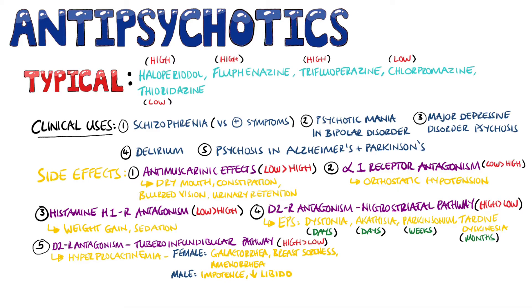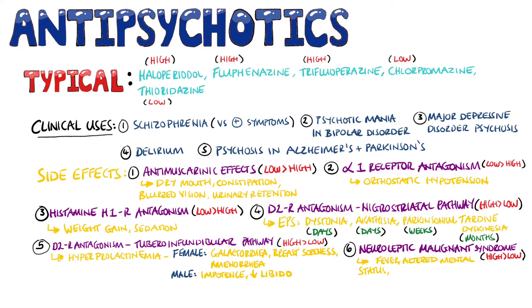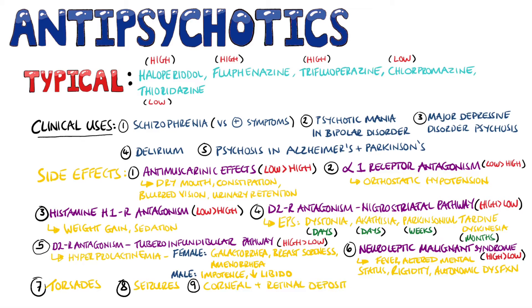We also have neuroleptic malignant syndrome, which is a life-threatening reaction to the antipsychotics, seen more commonly in the higher potency medications. It is characterized by fever, altered mental status, muscle rigidity, and autonomic dysfunction. Other side effects include torsades arrhythmia, seizures, as well as corneal and retinal deposits with chlorpromazine and thioridazine respectively.